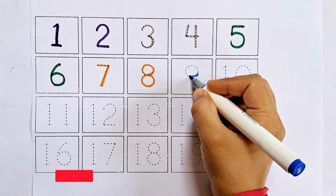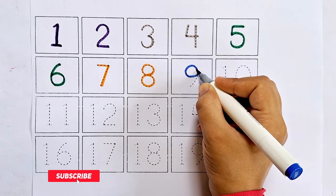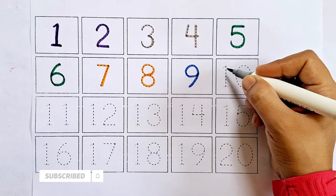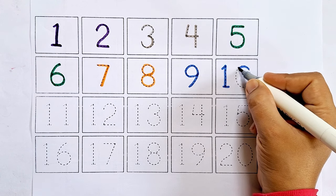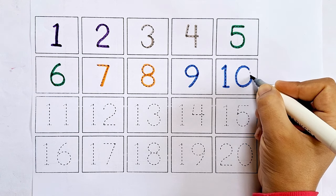Nine. This is nine. After eight comes nine. Ten. This is ten. One zero, ten. After nine comes ten.